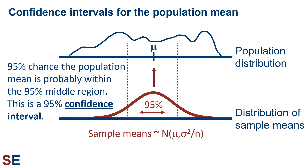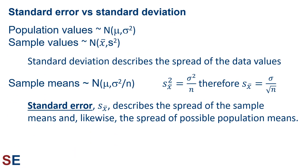The standard deviation of that distribution of sample means is called the standard error. When we think about a distribution of values like a population or sample of values, we often describe them as normally distributed around the mean with some particular variance. The standard deviation describes the spread of the data values in that population or sample. Our distribution of sample means is also normally distributed, but its variance comes from the variance in the population divided by the sample size. The standard deviation of that set of sample means — that would be the standard deviation of the population divided by the square root of the sample size — is called the standard error.